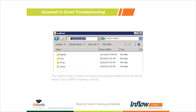Anything that ends up in the Bad Mail folder should be considered lost notifications. It's generally not worth the time required to modify those files to put them back into the Queue. I recommend deleting everything in the Bad Mail folder when making modifications, so next time you check you can confirm: Bad Mail folder is empty since the last change, no new errors. Focus your attention on the Queue folder.